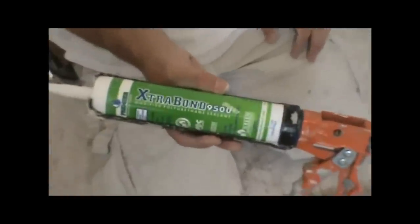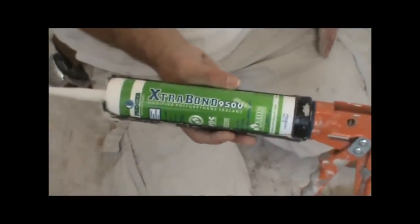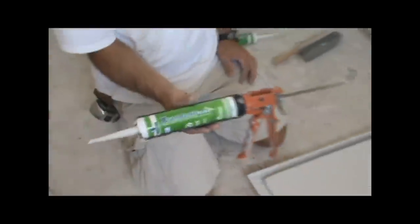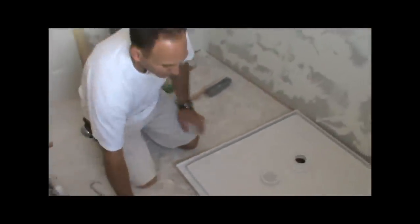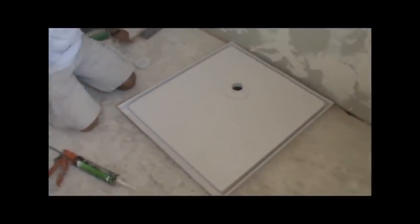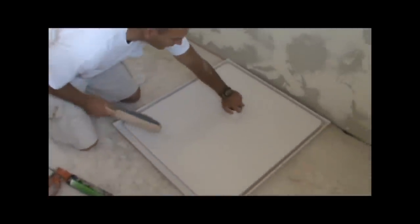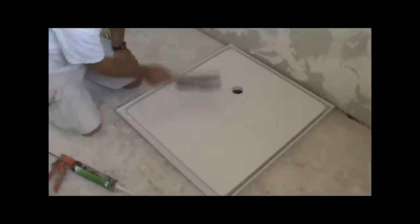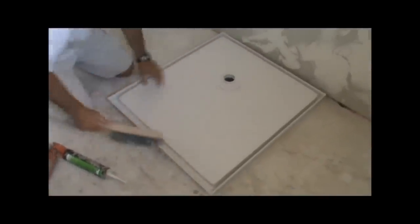To glue it down, I usually like to use the Extra Bond 9500. It gives a good bond to both the PVC and also the subfloor. The drain should be dry now. Just want to make sure the floor area and the back side of this pan is cleaned off, free from dust and debris.